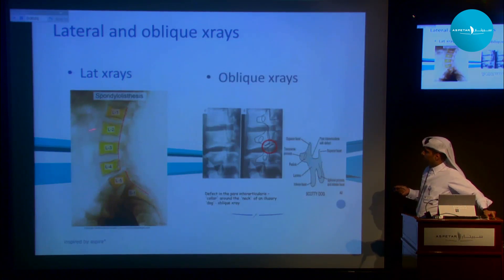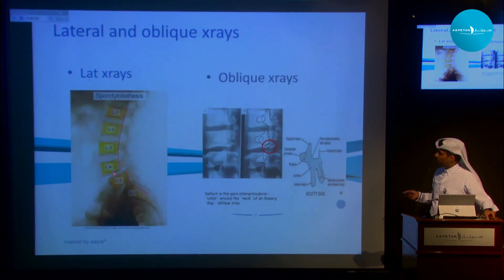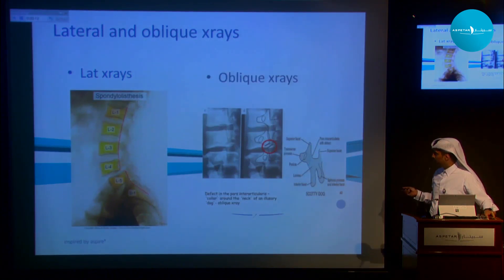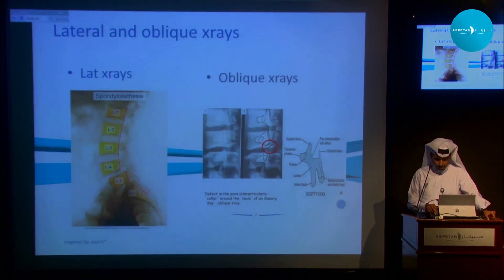These are the lines drawn on the lateral x-ray — you can see clearly that this line is broken, which signifies Grade 1 instability. Again on the oblique x-rays you can see clearly that there is a pars fracture or a lytic lesion.